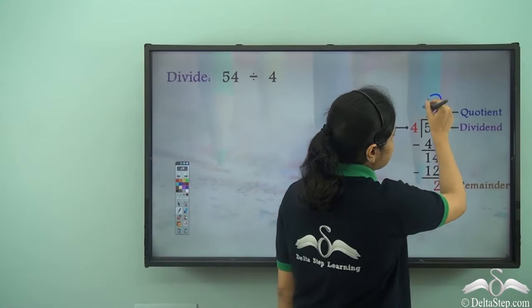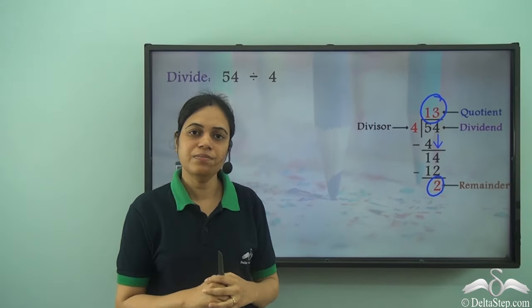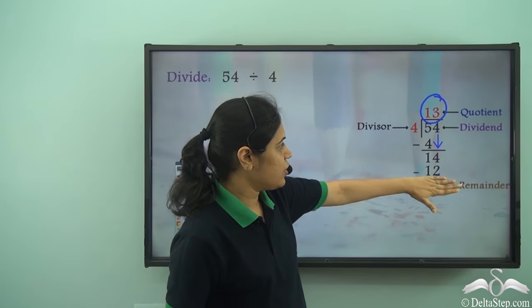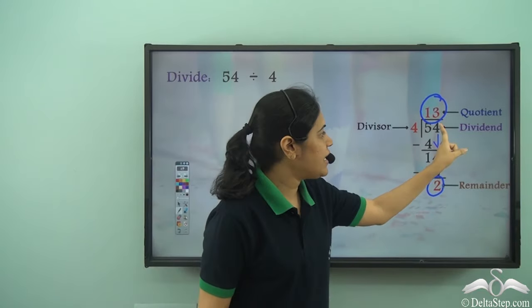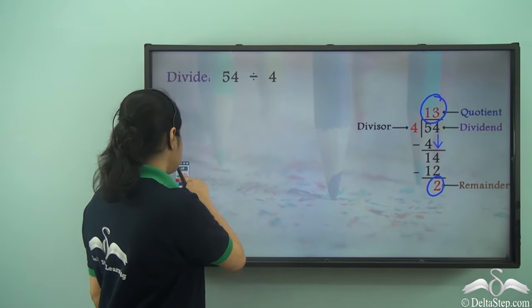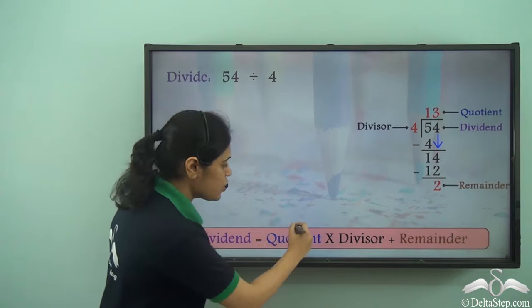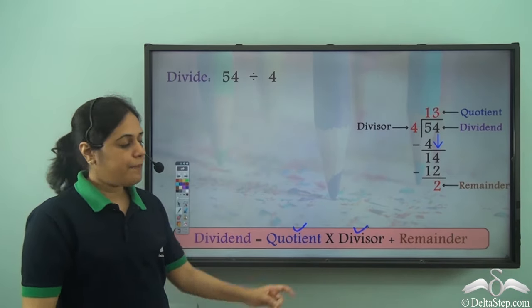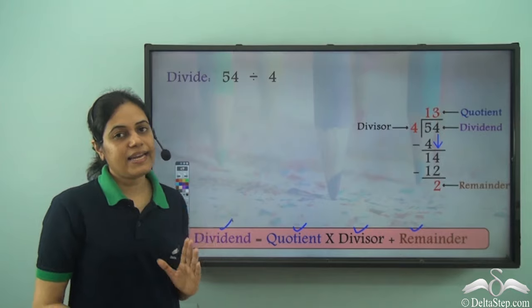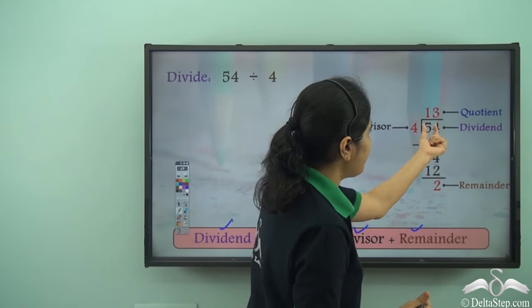This is how I check whether my division is correct or not. When the remainder was 0, we multiplied the quotient with the divisor and it gives us the dividend. But when we have a remainder, this should hold true: quotient into divisor plus remainder should be equal to dividend. If this holds true then my division is correct. In this case, my quotient is 13.